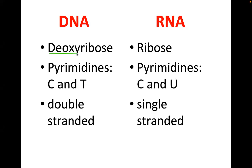We have what we call the pyrimidine bases. In differentiating DNA and RNA, remember that the pyrimidines of DNA are cytosine and thymine, while in RNA they are cytosine and uracil. Uracil is only found in RNA — memorize that by heart. Another major difference is that DNA is double-stranded, while RNA is single-stranded.